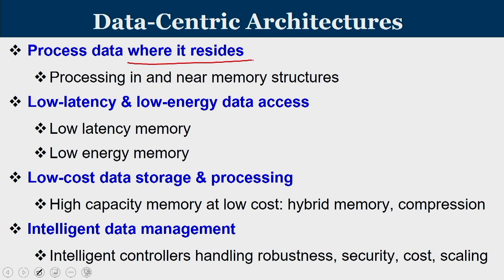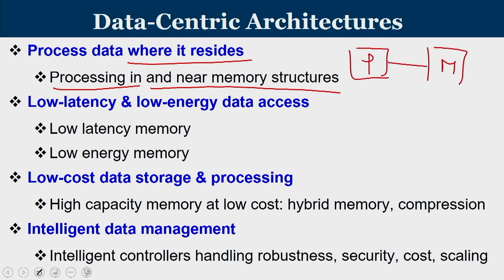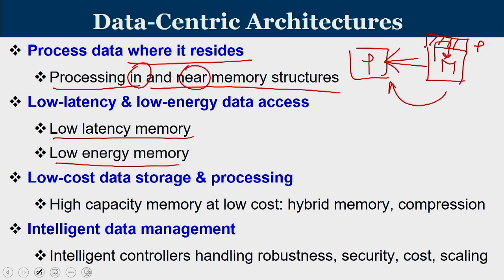This is made possible through something called in-memory computing or near-memory computing — processing in and near the memory system. Traditionally we have a processor and memory systems connected via a bus. Can we add a small processing module near the memory so that some operations, rather than moving data, can be processed and stored back? That is called processing in and near the memory system. We should also focus on low-latency and low-energy data access — can we store data in places where latency is low, and have techniques where reading and writing from memories consumes less energy?